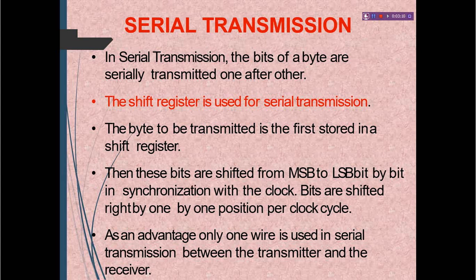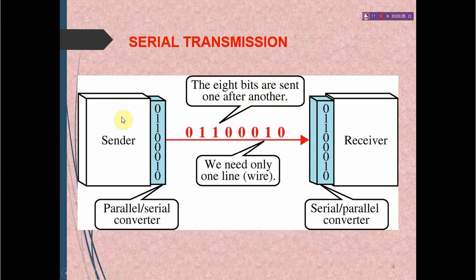As an advantage, only one wire is used in serial transmission between the transmitter and the receiver. There is a single wire and bits are moved serially one after another. The sender device and receiver device are connected by this single wire, and bits go one by one from sender to receiver in serial transmission.